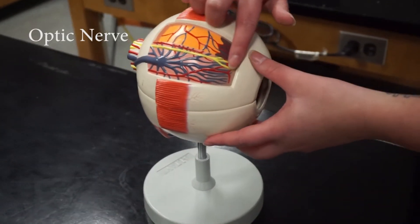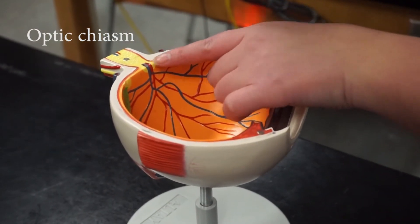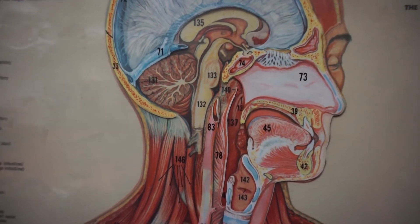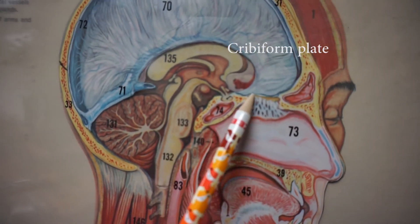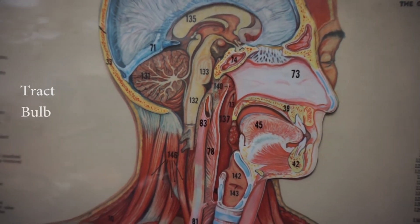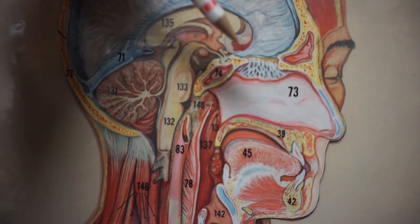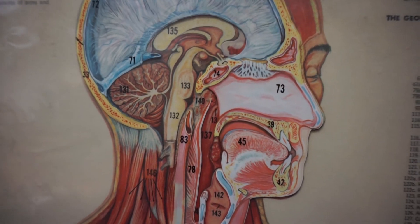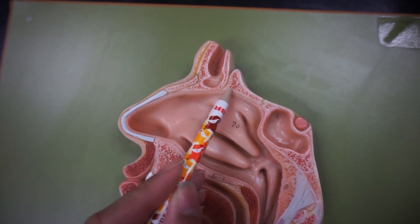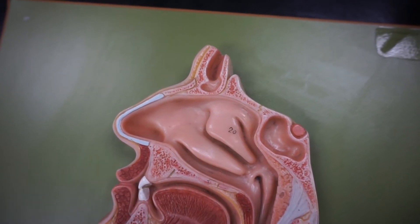This is the eyeball, and this yellow structure is the optic nerve. Where they meet in the back is the optic chiasma. The olfactory nerve lies above the cribriform plate and consists of the olfactory tract, the bulb, and the filaments. The filaments branch down into the superior area of the nasal conchae. In this model you can see the cribriform plate more clearly, with the olfactory nerve laying above and the branches entering into the superior nasal conchae.